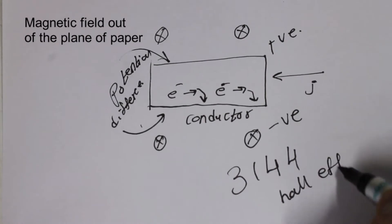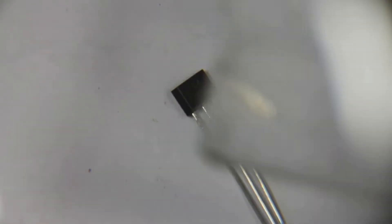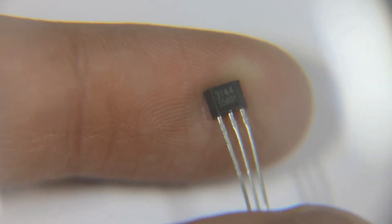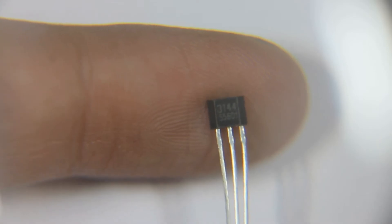For this video, I would be using the 3144 Hall Effect sensor. Here is the sensor with respect to centimeter and within an inch. The sensor is very small, thus making it convenient for project applications.